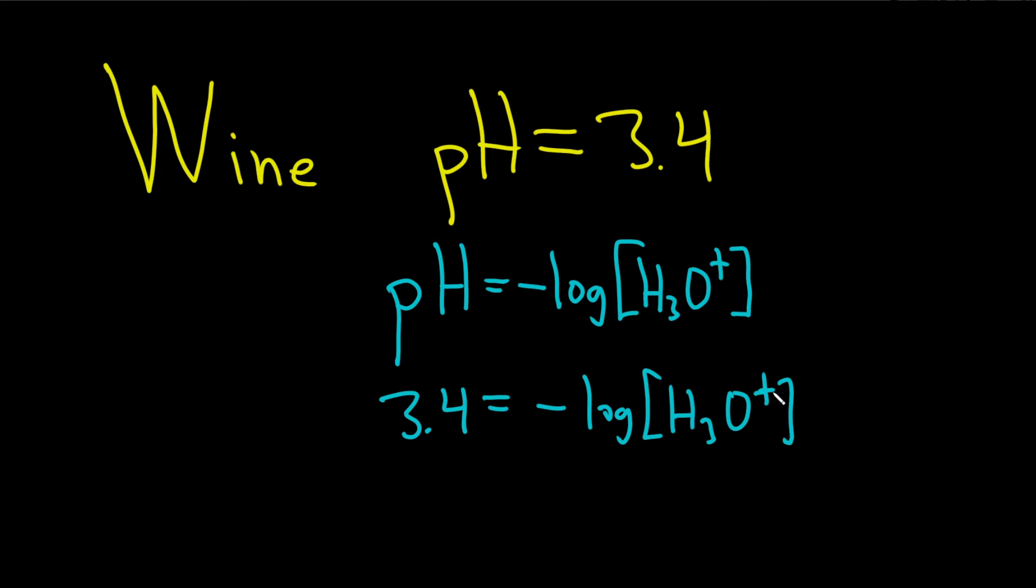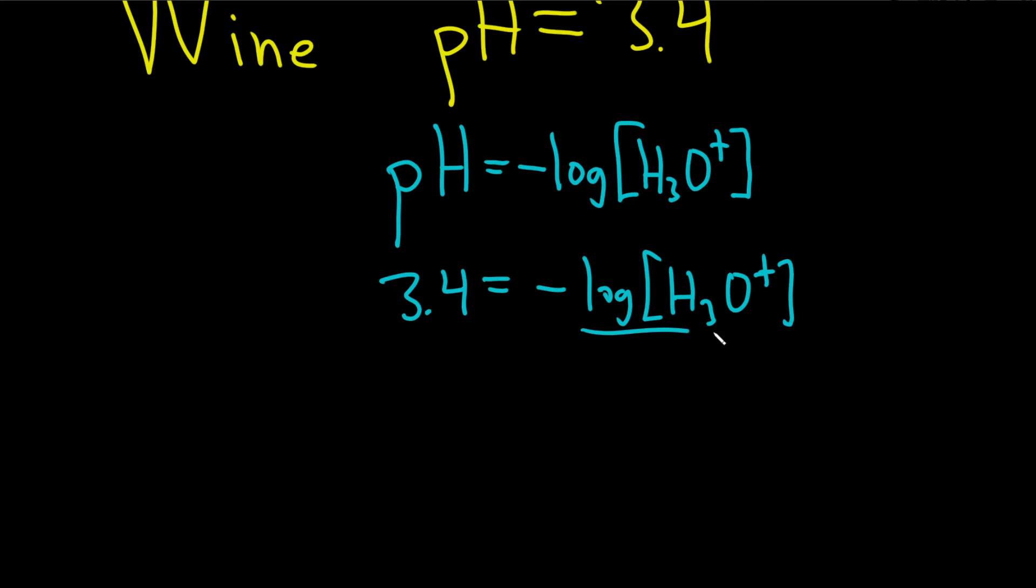So the big problem here is the negative. So we can just divide both sides by negative one. That's the key, right? You first want to get rid of this negative. This is negative 3.4 equals log H3O plus.